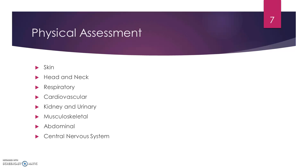Then we do our head-to-toe assessment. Skin: any rashes, bruising, or petechiae. Head and neck: any swollen lymph nodes. Respiratory: how are they breathing, any crackles or wheezes? Cardiovascular: do they have good pulses? Kidney and urine: good urine output or decreased volume? Musculoskeletal: muscle size, equal bilaterally, strength bilaterally? Abdominal: palpate for masses, bruising. Central nervous system: how are they functioning?